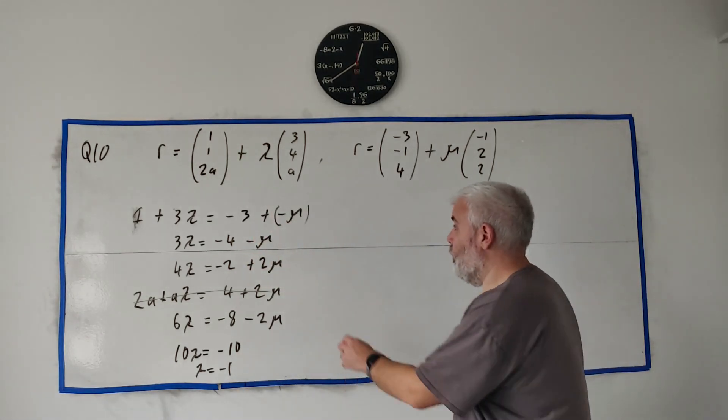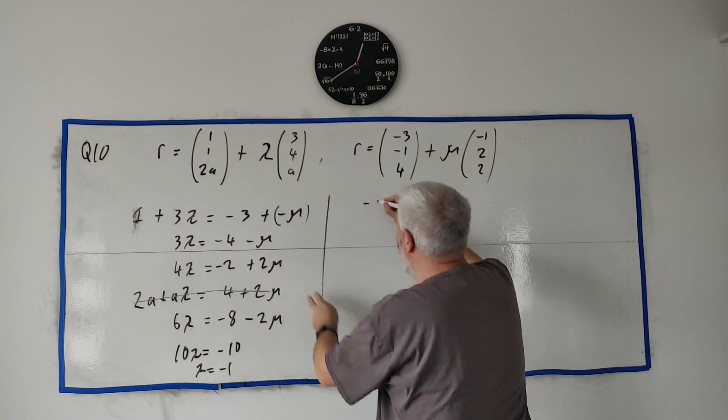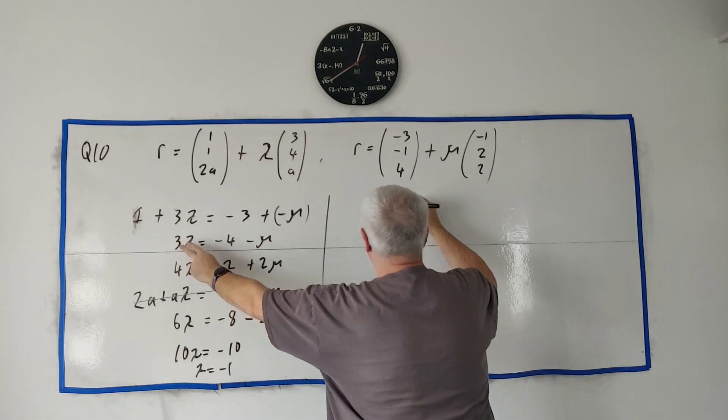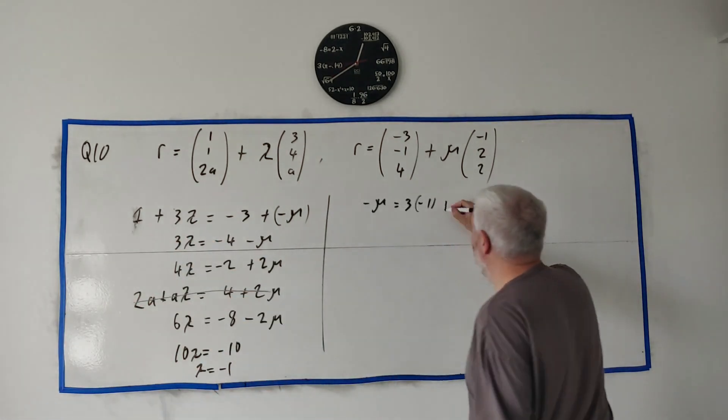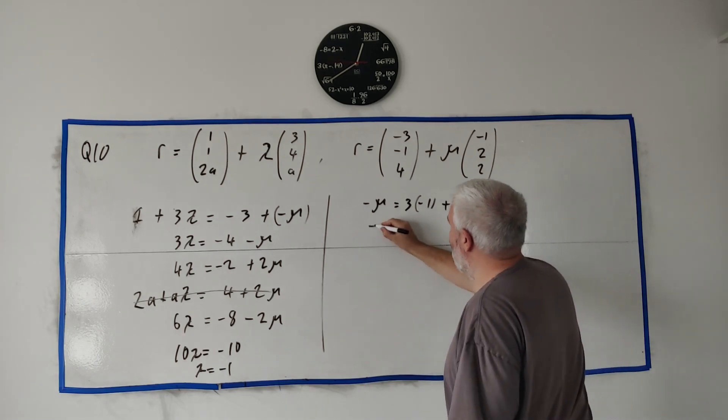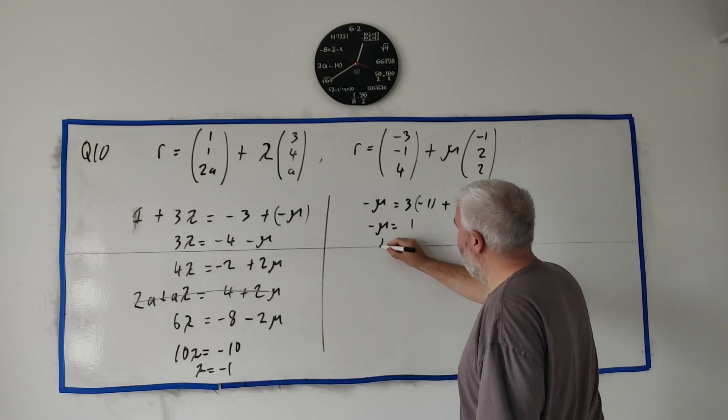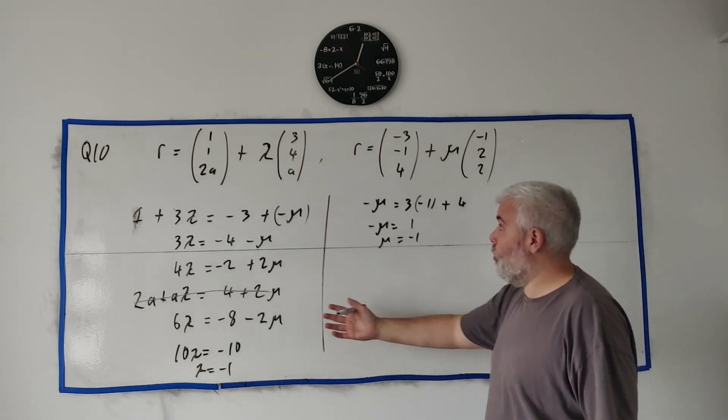Put it back in to find μ. Let's use this line here: we get -μ = 3 × (-1), that's -3, and then this guy would come over plus 4, so that's -μ = 1, μ = -1.